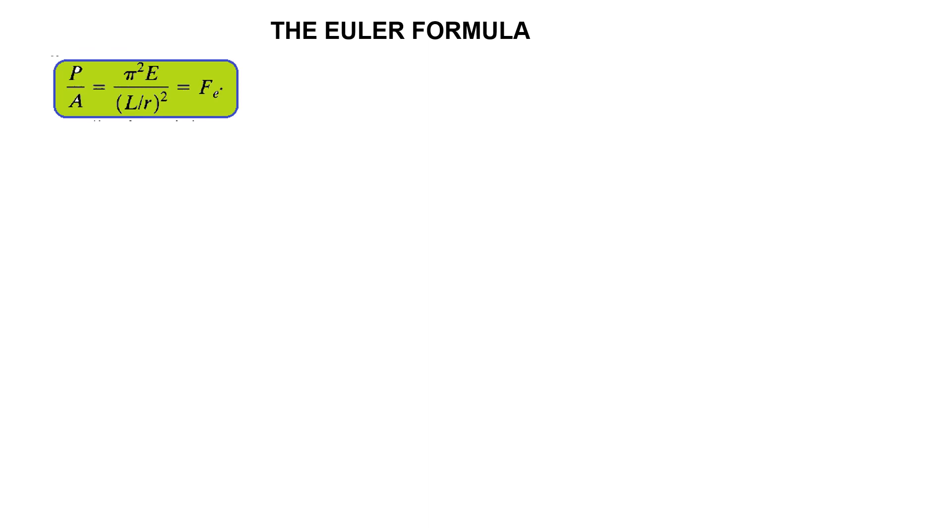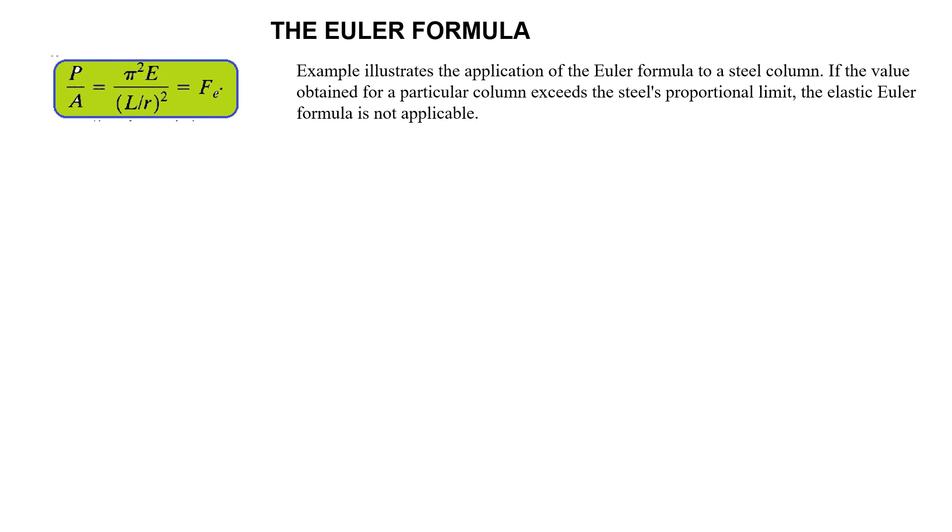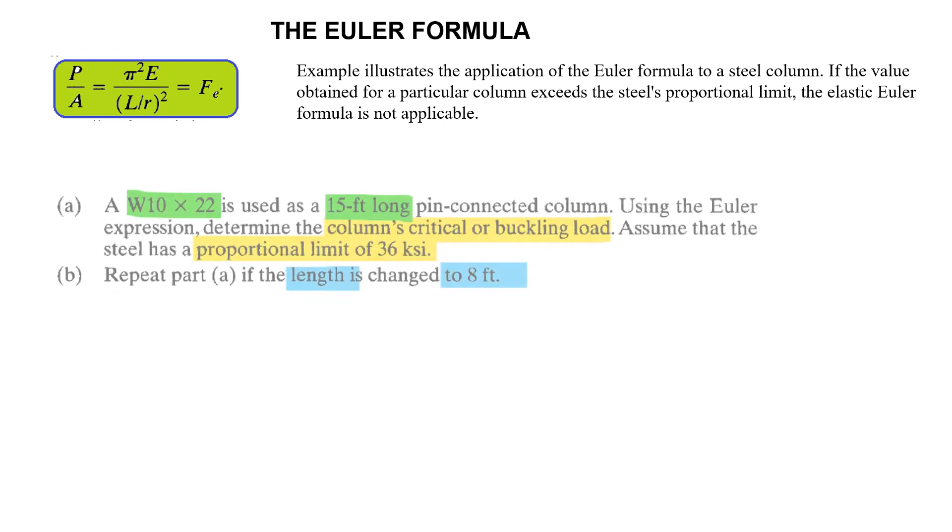An example will illustrate the application of the Euler formula to a steel column. If the value obtained for a particular column exceeds the steel's proportional limit, then the elastic Euler formula is not applicable.